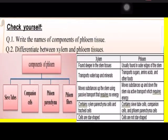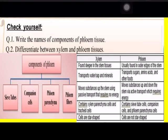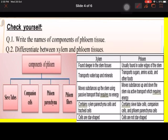Question one: write the names of the components of phloem tissue. The answer is: sieve tubes, companion cells, phloem parenchyma, and phloem fiber. Question two: differentiate between xylem and phloem.